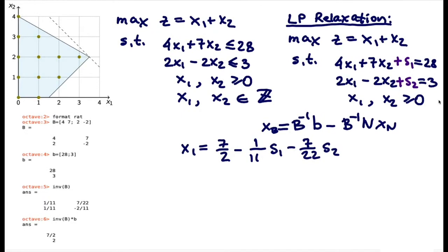Before proceeding, observe that whenever we have a feasible integer solution to the LP relaxation, x1 and x2 must be integer. The coefficients for x1 and x2 are integer in both equations and we have integer right-hand sides. As a result, whenever we have an integer feasible solution to the LP relaxation, s1 and s2 must also be integer.